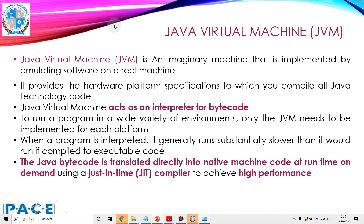What is the Java virtual machine — JVM? The Java virtual machine is an imaginary machine that is implemented by emulating software on a real machine. It provides the hardware platform specification to which you compile all Java technology code. The Java virtual machine acts as an interpreter for the bytecode. To run a program in a wide variety of environments, only the JVM needs to be implemented for each platform. When a program is interpreted, it generally runs substantially slower than if it were compiled to executable code. So, the Java bytecode is translated directly into native machine code at runtime on demand using a just-in-time, JIT, compiler to achieve high performance.